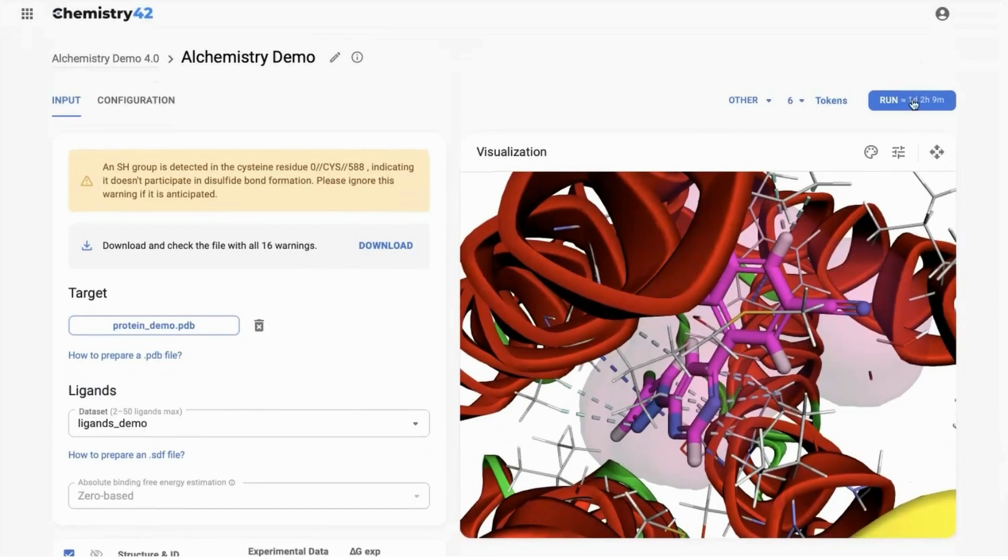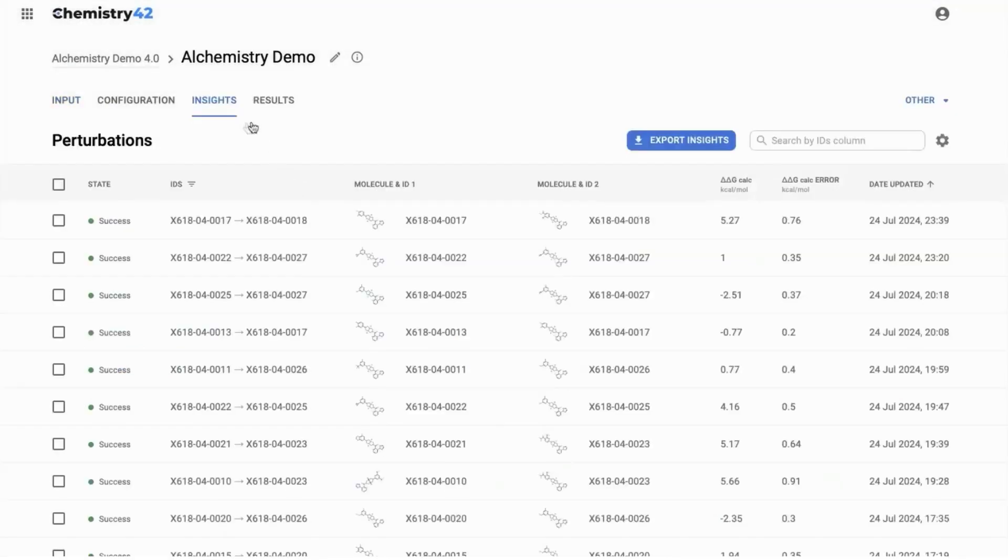We also added a new tab, Insights, that offers detailed information on each perturbation within an experiment. This allows you to monitor the current status of all perturbations and analyze results in real time. Additionally, Insights can be exported in CSV format for further analysis.